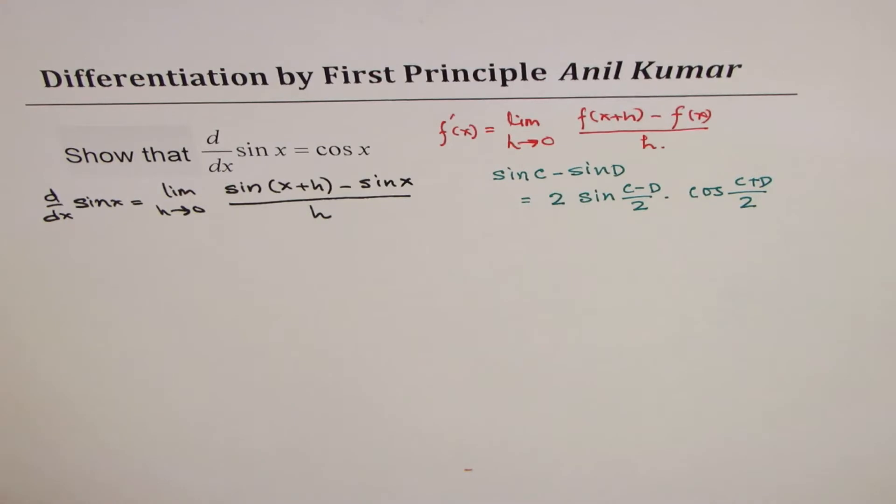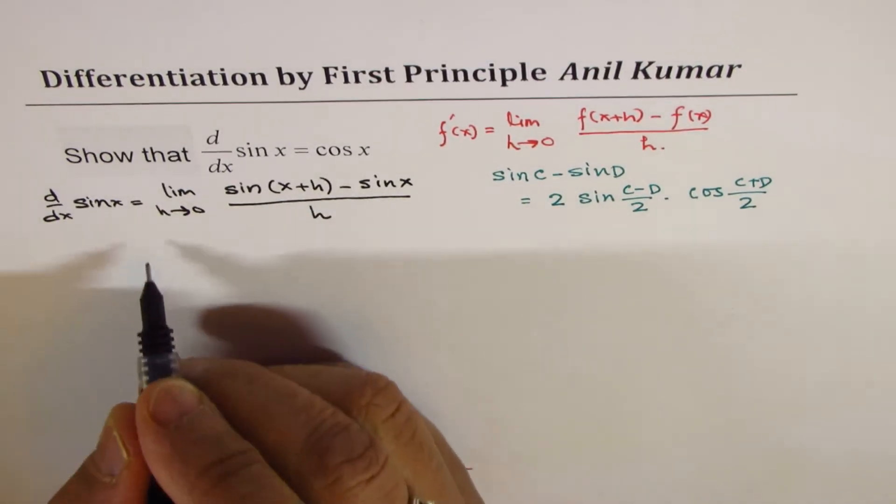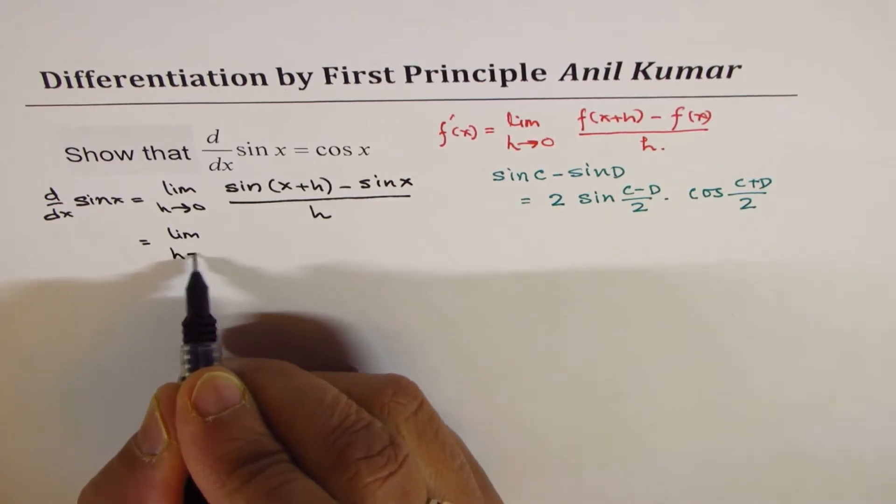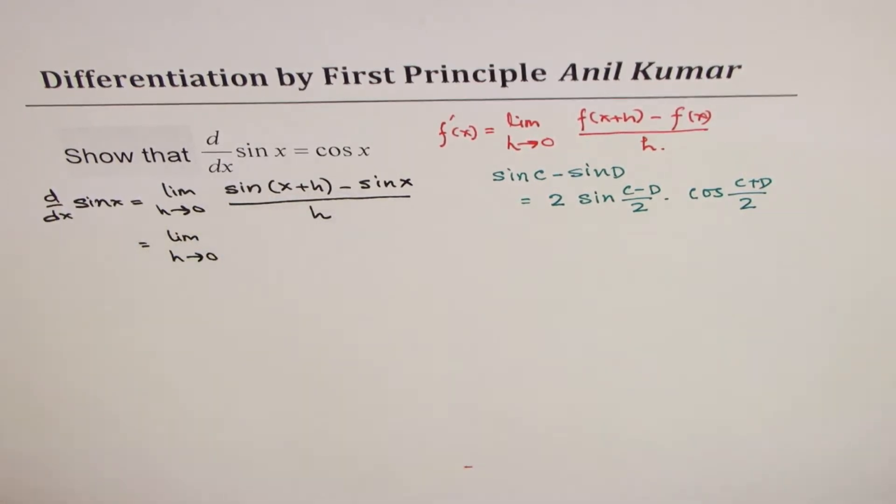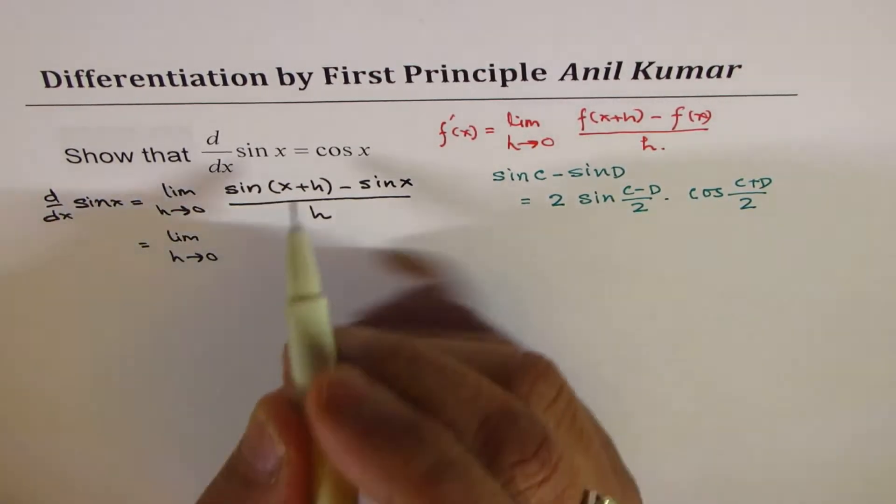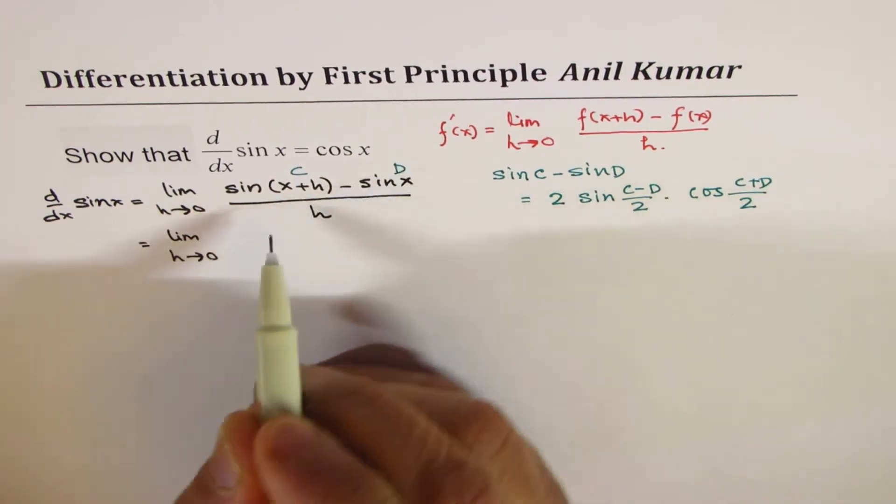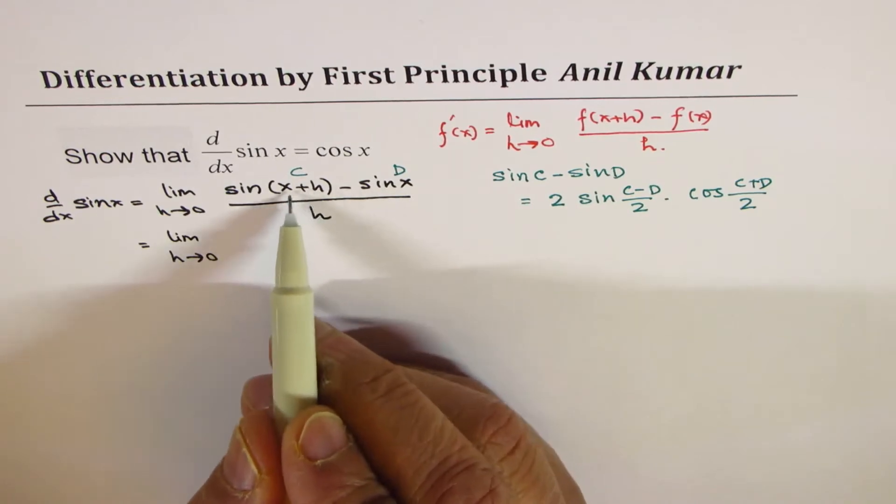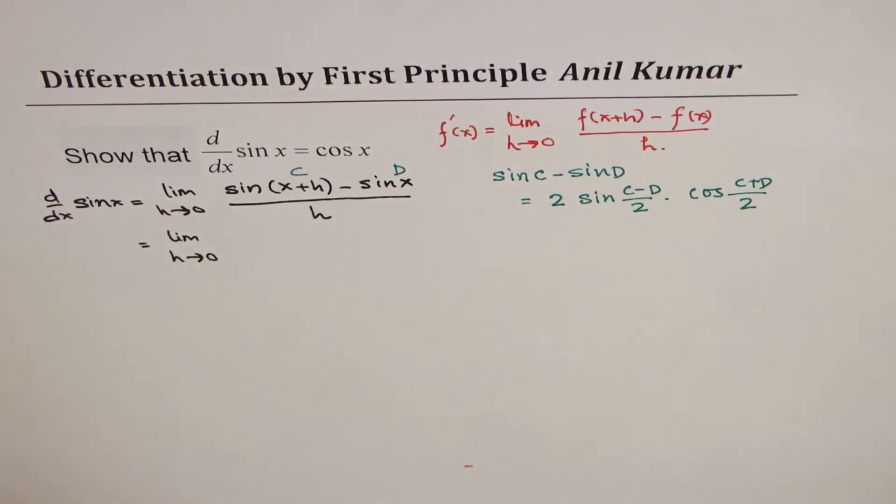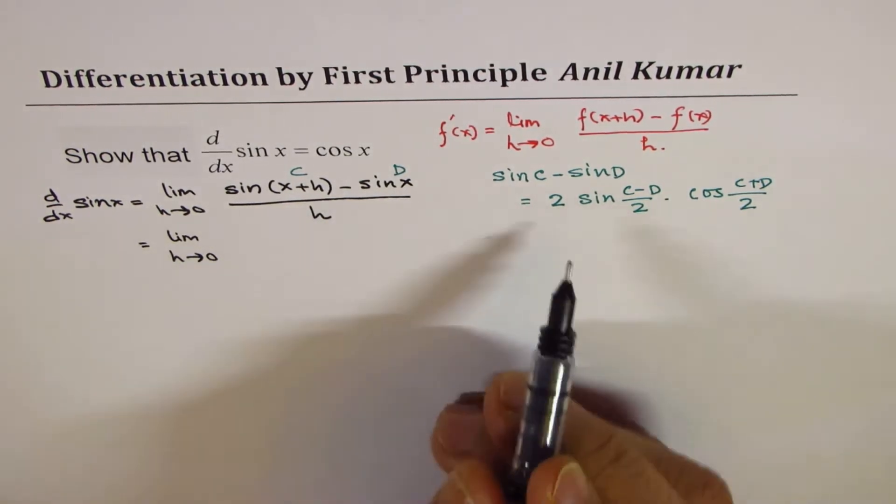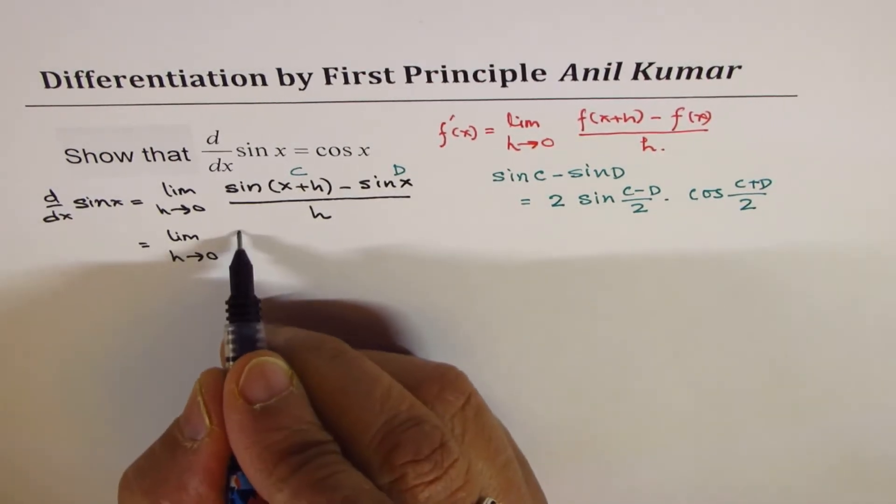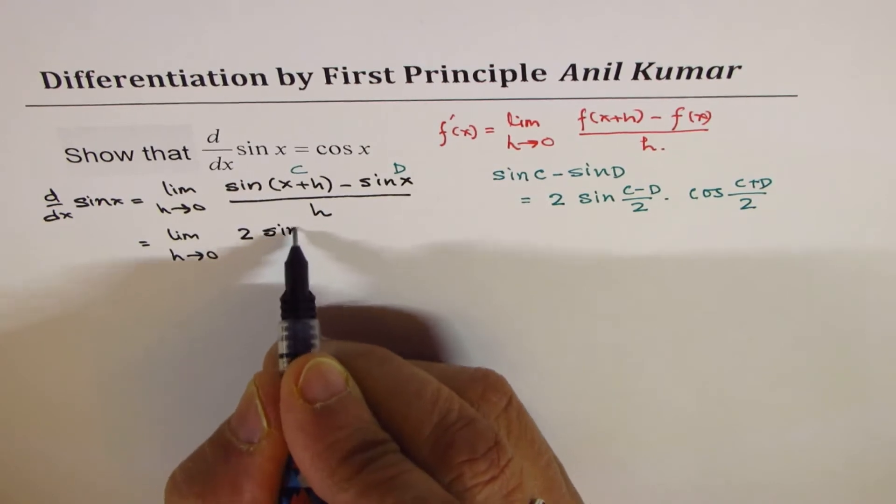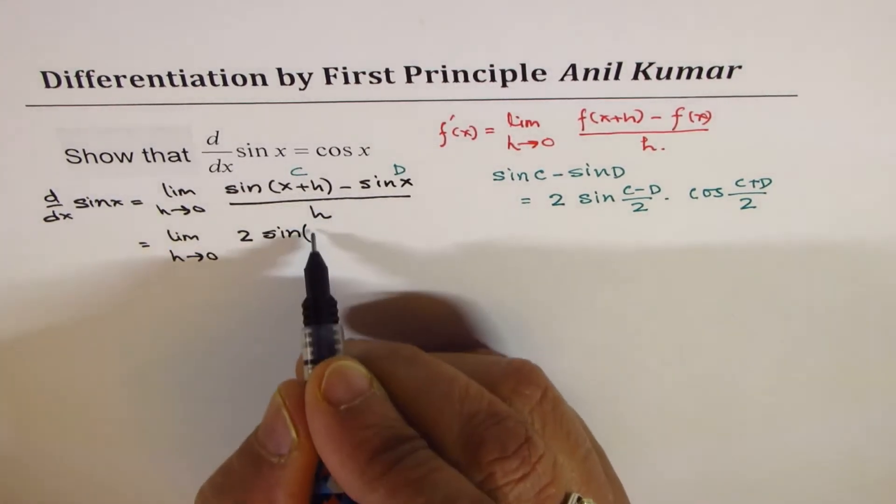So we will apply this formula now and rewrite the expression as limit h approaches 0. Think like this: this is c for you and this is d for you. So c minus d is x plus h minus x, which is h. Divide by 2 means h by 2. So we get 2 times sine of h by 2.